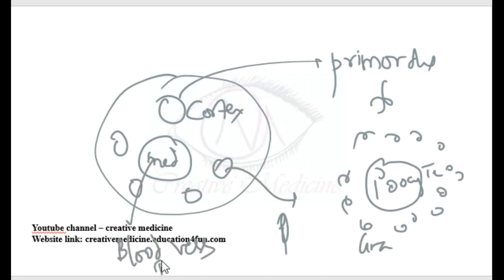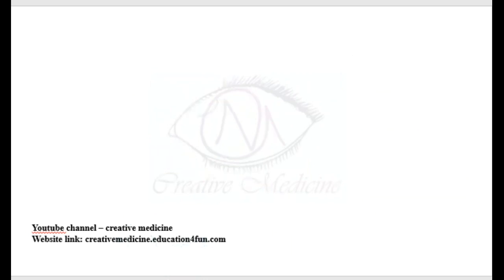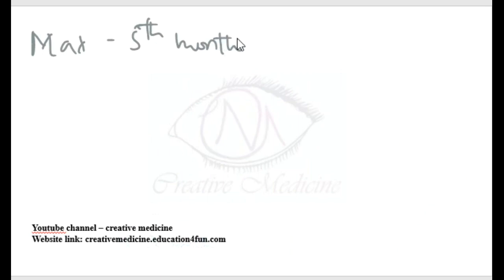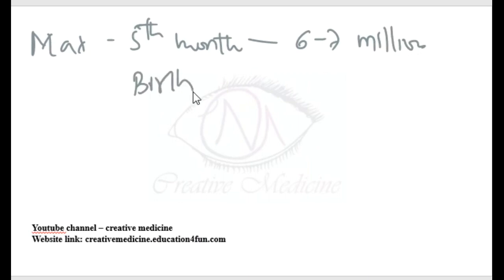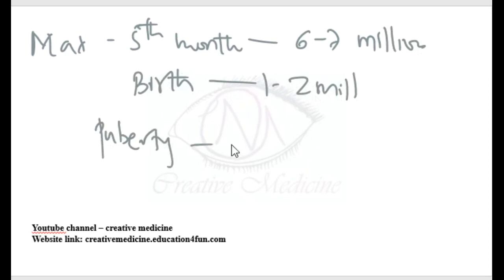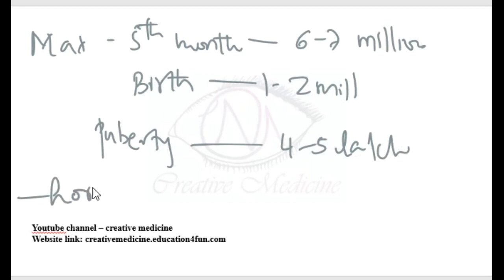Number of follicles: the number of follicles is maximum at the 5th month of intrauterine life, with around 6–7 million follicles. At birth, there are around 1–2 million follicles. At puberty, there are 4–5 lakh follicles. The initial recruitment of follicles is hormone independent.